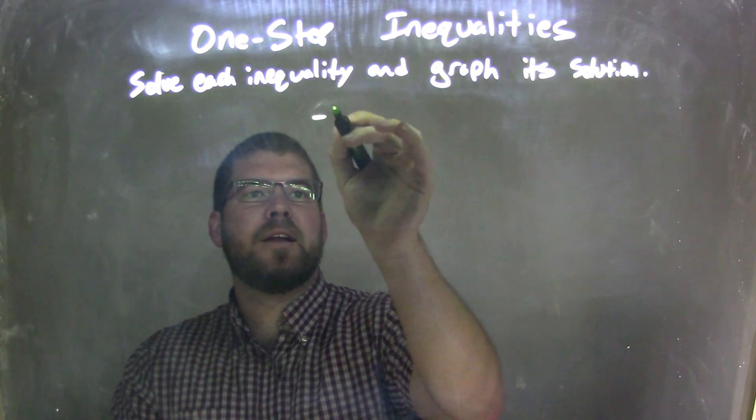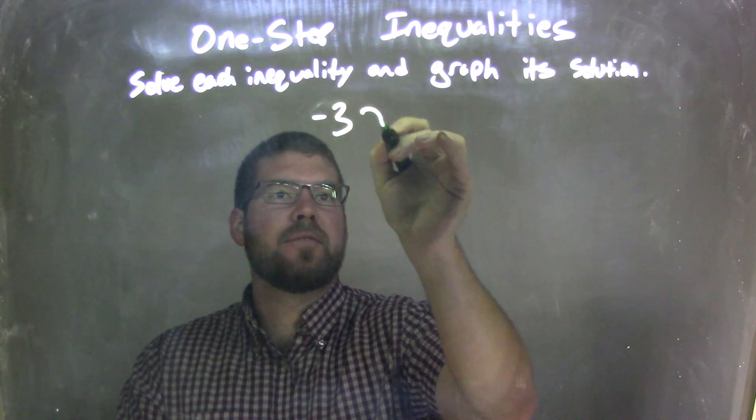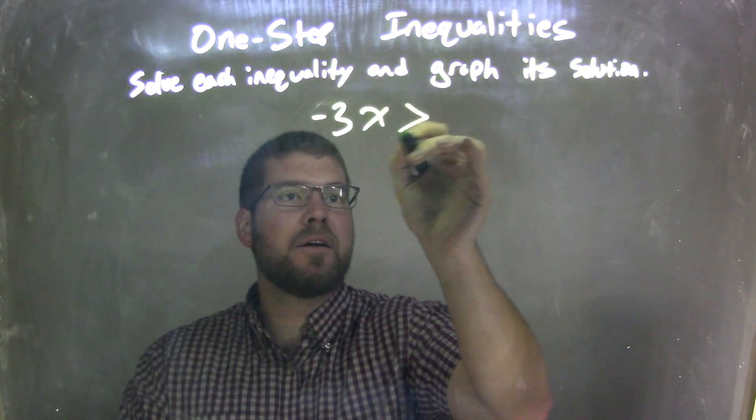We're going to solve each inequality and graph the solution. So if I was given this inequality, negative 3x is greater than 3.